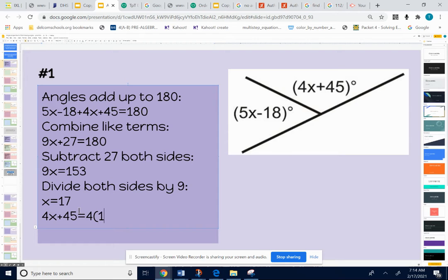So I'm going to type in 4x plus 45. That angle would equal 4 times 17 plus 45. 4 times 17 is 68 plus 45. When I add those up, I get 113. I don't have room to write degrees, so I'll just leave it. My other angle is 5x minus 18. So I'm going to put 17 in for my x. It's going to be 5 times 17 minus 18. I can multiply first. 5 times 17 is 85. And 85 minus 18 is 67 degrees.